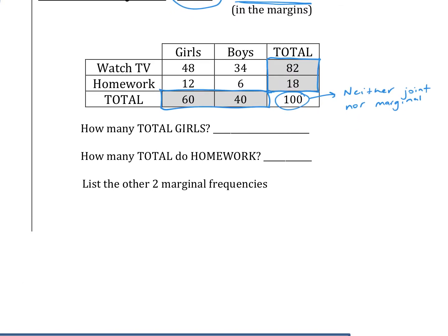Pause the video and answer the three questions. How many total girls? That's 60. How many total do homework? That's 18. Total boys is 40. And total watch TV is 82. Those are your marginal frequencies.